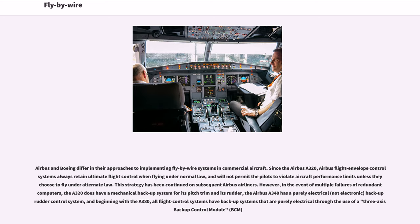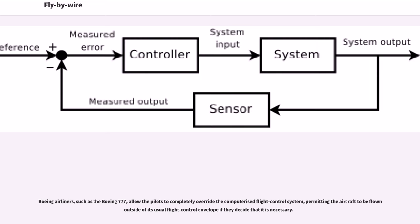The Airbus A340 has a purely electrical, not electronic, backup rudder control system. Beginning with the A380, all flight control systems have backup systems that are purely electrical through the use of a three-axis backup control module (BCM). Boeing airliners, such as the Boeing 777, allow the pilots to completely override the computerized flight control system, permitting the aircraft to be flown outside of its usual flight control envelope if they decide it is necessary.